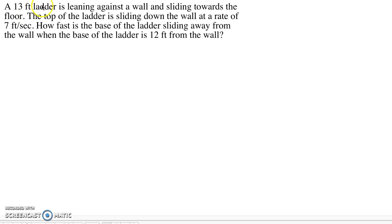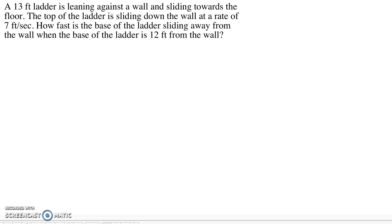And what we have is a ladder leaning up against a wall and the ladder is going to be sliding down the wall. So I've actually got a little simulation of this here we can take a look at. Of course here is our ladder. And this is going to represent the wall, this would be the ground. And the ladder is going to slide down the wall at a rate of 7 feet per second. The question is, how fast is the base of the ladder sliding away from the wall when the base of the ladder is 12 feet from the wall?